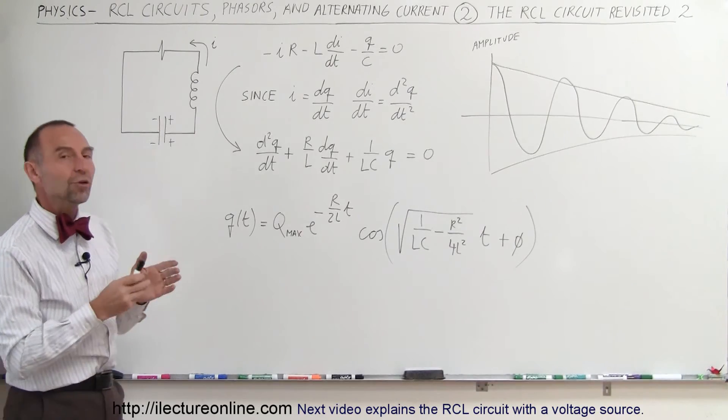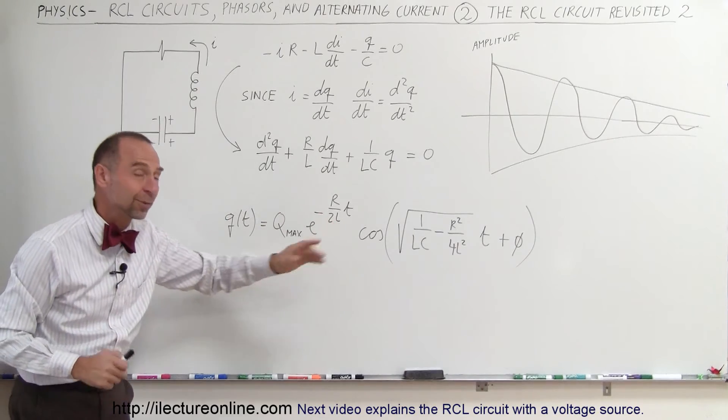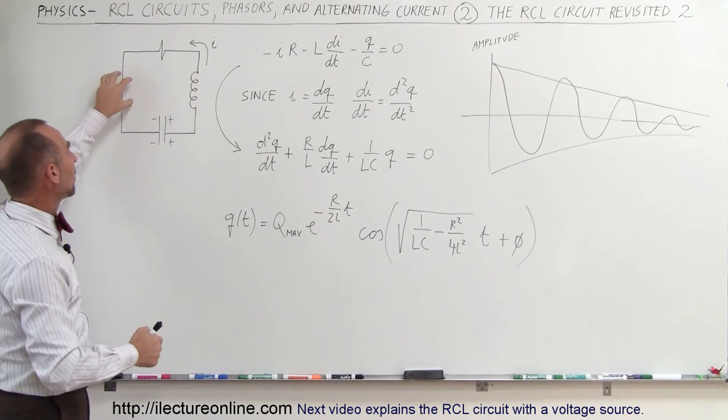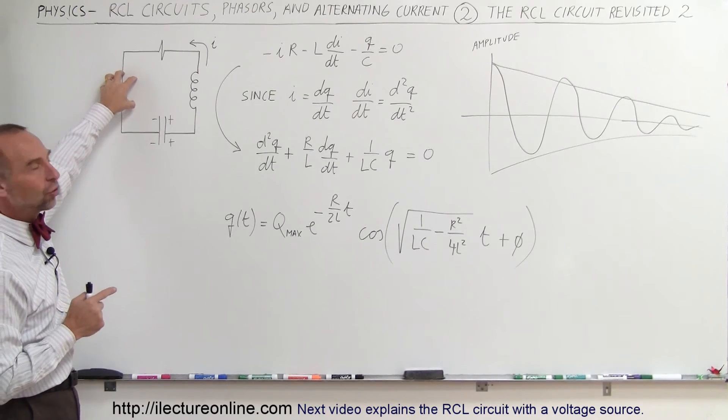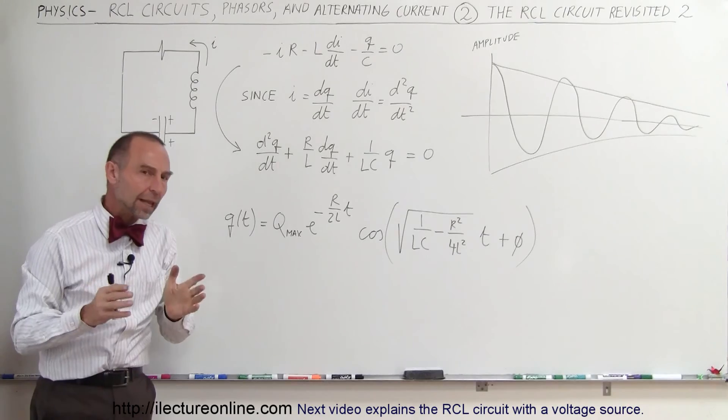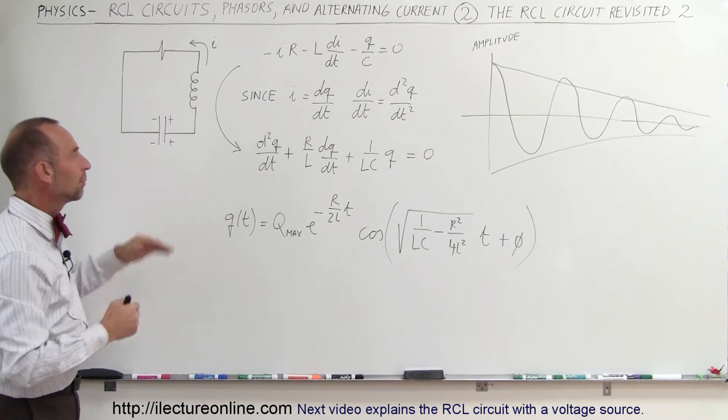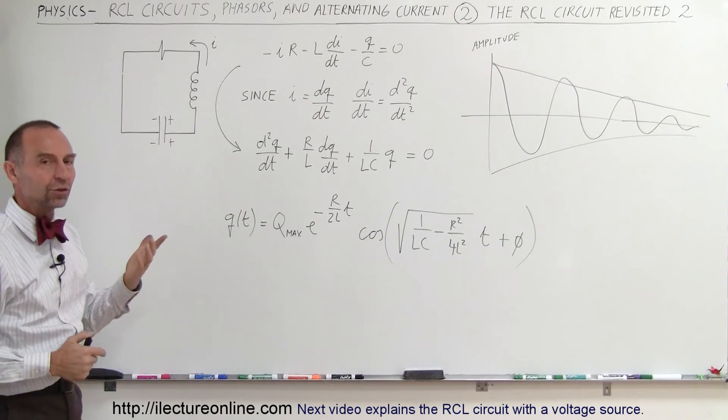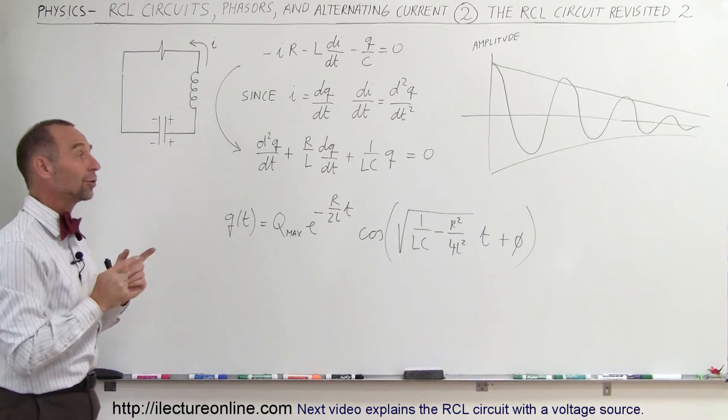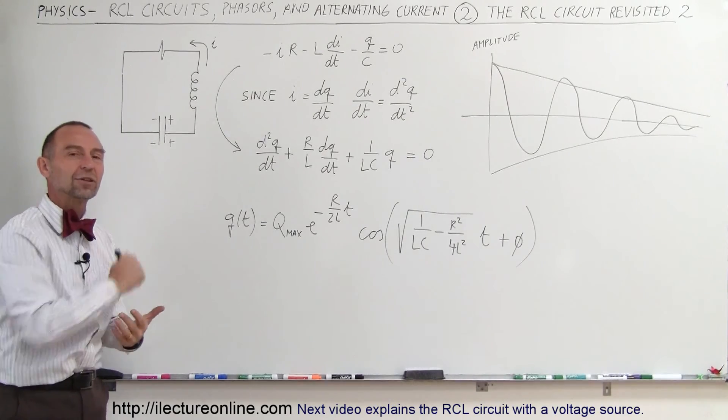So that's just a quick review. We have a video with a lot more detail on this particular topic, but I want to do a quick review in this series because next we're going to take a look at what the circuit will look like when we have something driving the voltage. Then our differential equation will look a little bit different, and we'll be able to compare it to what we have here when we don't have a voltage driver in the circuit. Stay tuned if you're interested in this kind of stuff, because now we're going to take a look at the RCL circuit and how it behaves when we have a voltage driving the circuit.